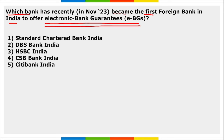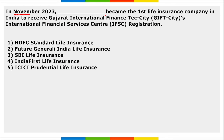HSBC India became the first foreign bank in India to offer electronic bank guarantees. An electronic bank guarantee is a guarantee issued by a bank to a beneficiary on behalf of an applicant, promising to pay the specific amount if the applicant fails to fulfill a certain obligation.